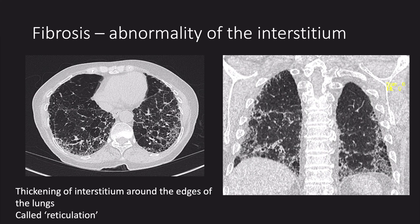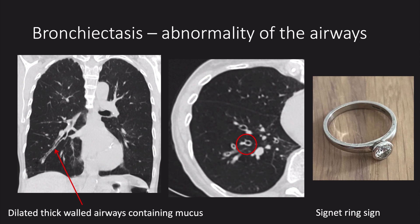Moving on to diseases of the interstitium. This is an example of pulmonary fibrosis — thickening of the interstitium produces a lacy appearance called reticulation, leading to shortness of breath as the lungs lose elasticity as they become progressively scarred. Finally, bronchiectasis is an example of an airways disease, characterised by dilatation of the airway so it's larger than its accompanying artery. Thickening of the bronchial wall alone does not mean there's bronchiectasis — the airway has to dilate. It's called the signet ring sign, as the circle of the dilated airway looks like a ring and the smaller white artery, the stone.